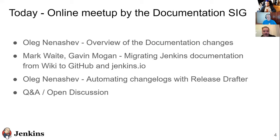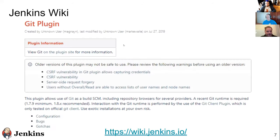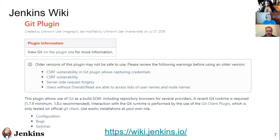So I'll start with an introduction, then Mark and Gavin will do demos, and then we'll also talk about changelogs. Who has ever seen this page? Mark Waite is a maintainer of the Git plugin, and if you use Jenkins you may have seen this page. This is how Jenkins plugin pages used to look — we have more than 1500 plugins, and most of them used to have documentation on the Wiki.